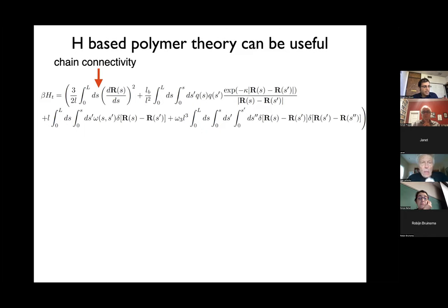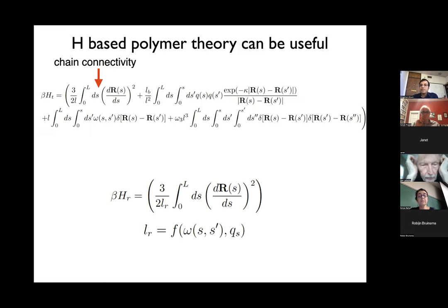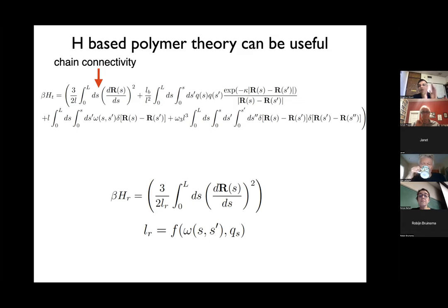From the Hamiltonian, we rewrite it as an effective Hamiltonian — we still respect the fact that it's a polymer with things connected like a chain. Now I have something like l_r in the effective Hamiltonian — a renormalized bond length — and all the sequence specificity gets lumped into that term. The sequence specificity comes from the second term, where I have q_s and q_{s'}: the charges at amino acids s and s'. We work in the continuum model to make the math easier, and that's where the sequence specificity enters.